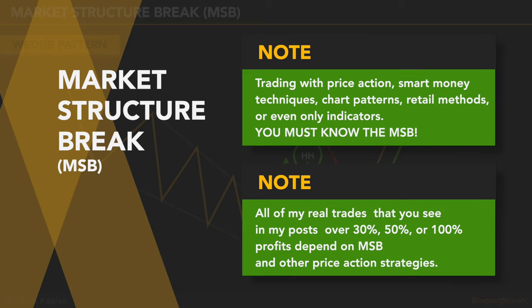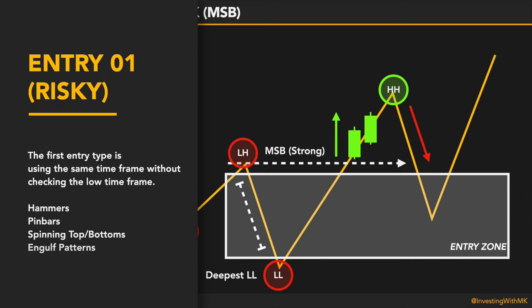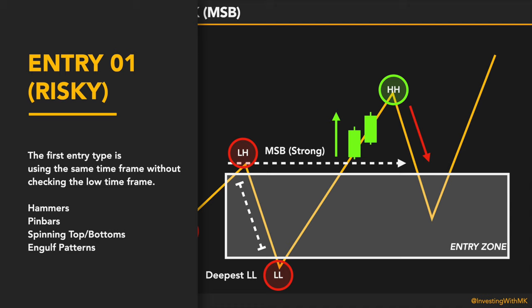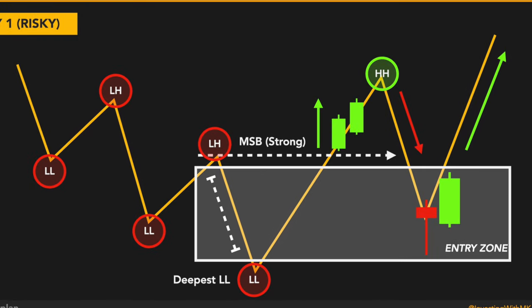That is one of the first things I look for before I start trading. Step 4: Entries — the most critical and probably the hardest part. We will learn every single entry area such as order blocks, Quasimodo, or Fibonacci levels in the next videos. The first entry type is using the same time frame without checking the low time frame. Hammers, pin bars, and spinning tops and bottoms are critical for finding entries, especially with long wicks, showing the strong will of buyers or sellers, and the following strong candle forming a bullish or bearish engulfing pattern for entries.